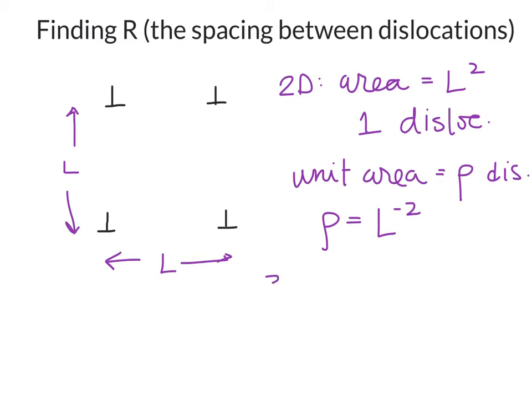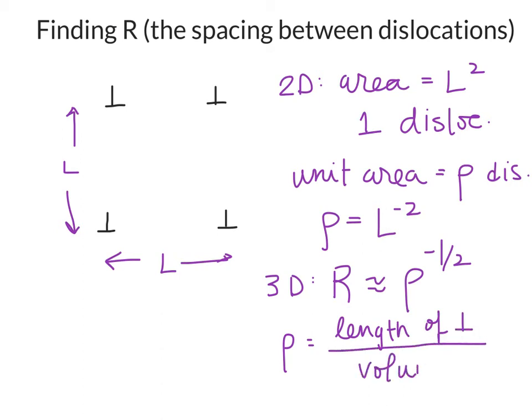Really, we have three-dimensional materials, and so we want to deal with the three-dimensional dislocation density. And so we approximate R, that spacing, to simply be the inverse square root of the dislocation density. The units on dislocation density are length of dislocation per unit volume. So it would be meters per meter cubed. Sometimes this ends up given as per centimeter squared.